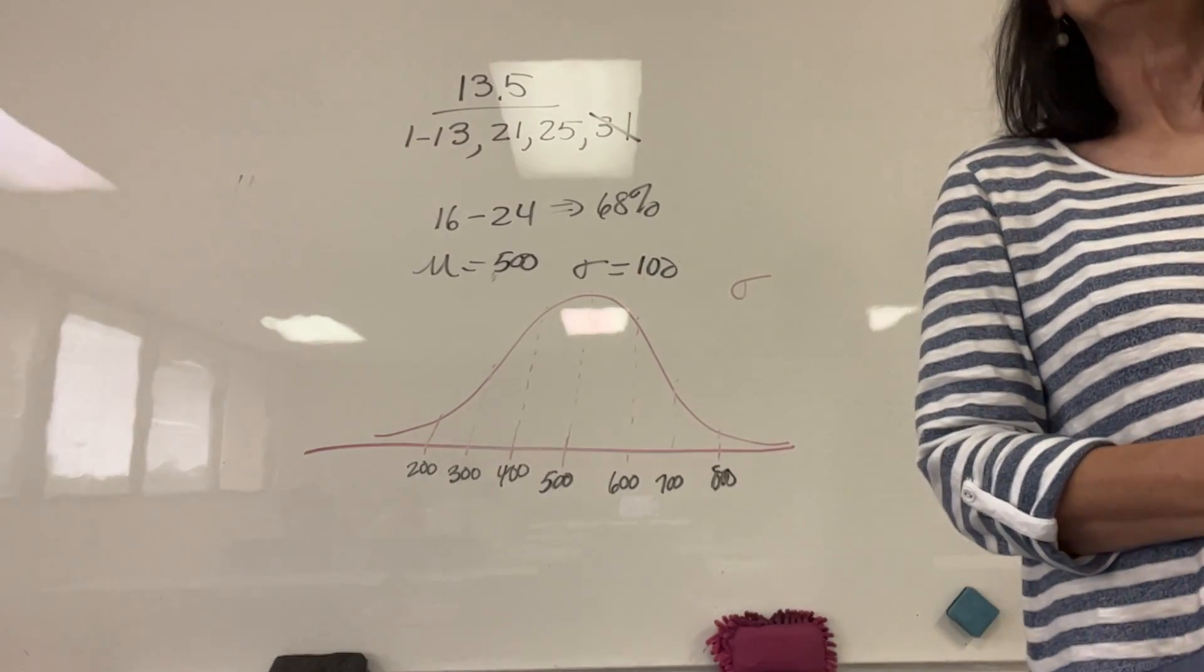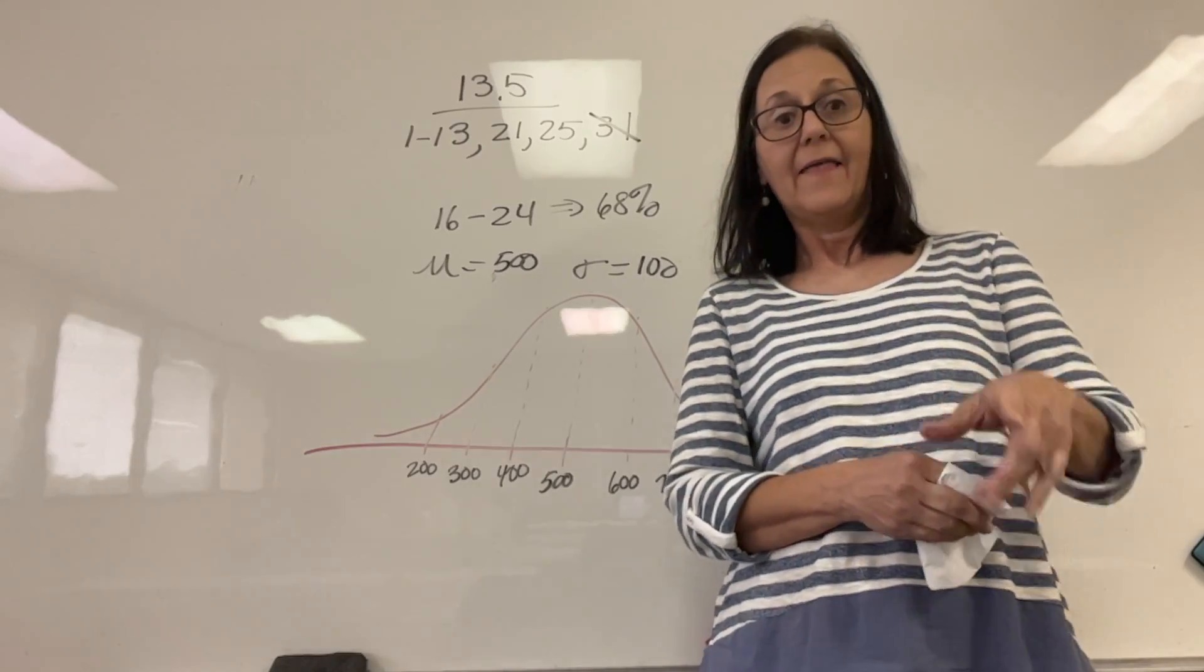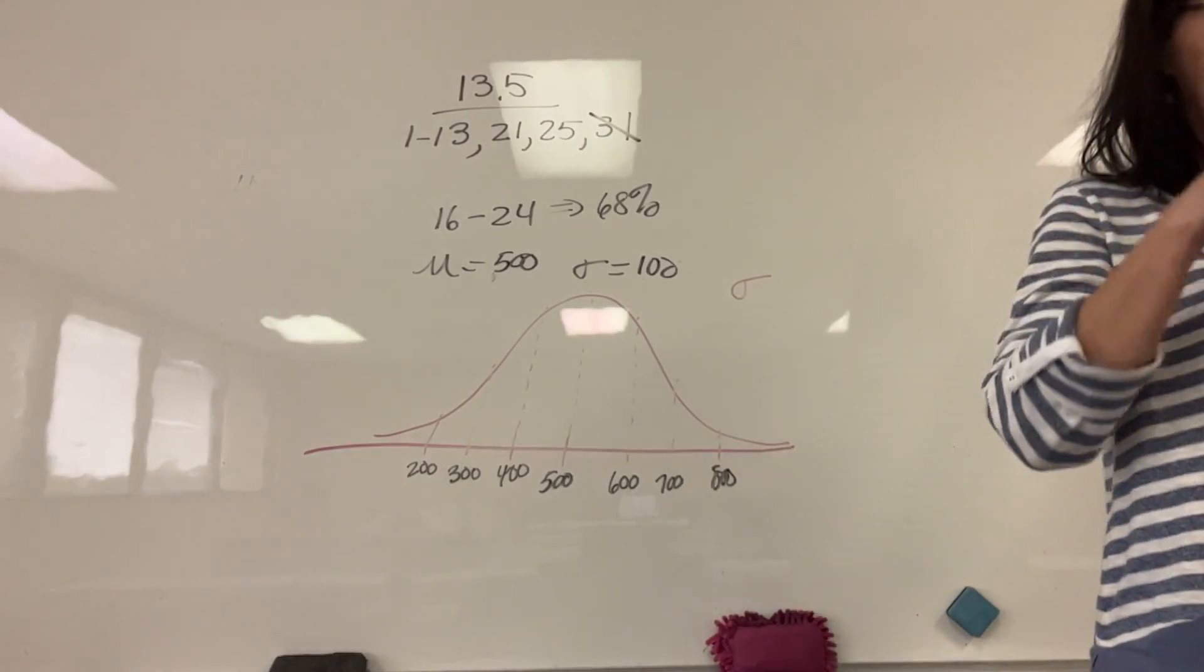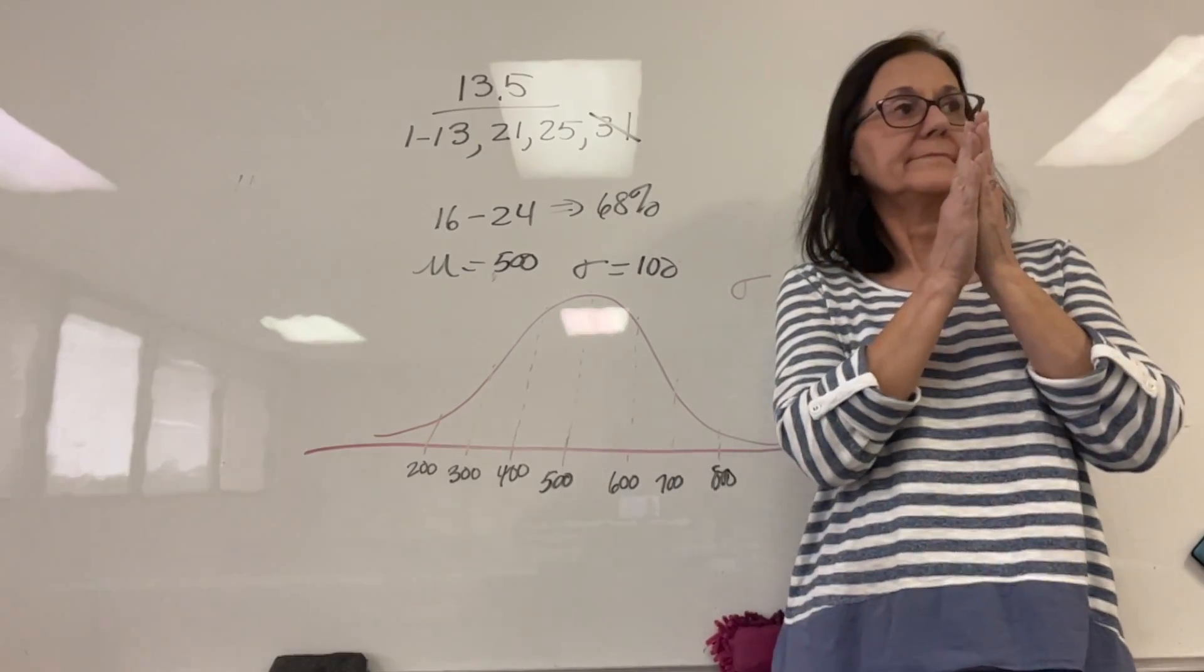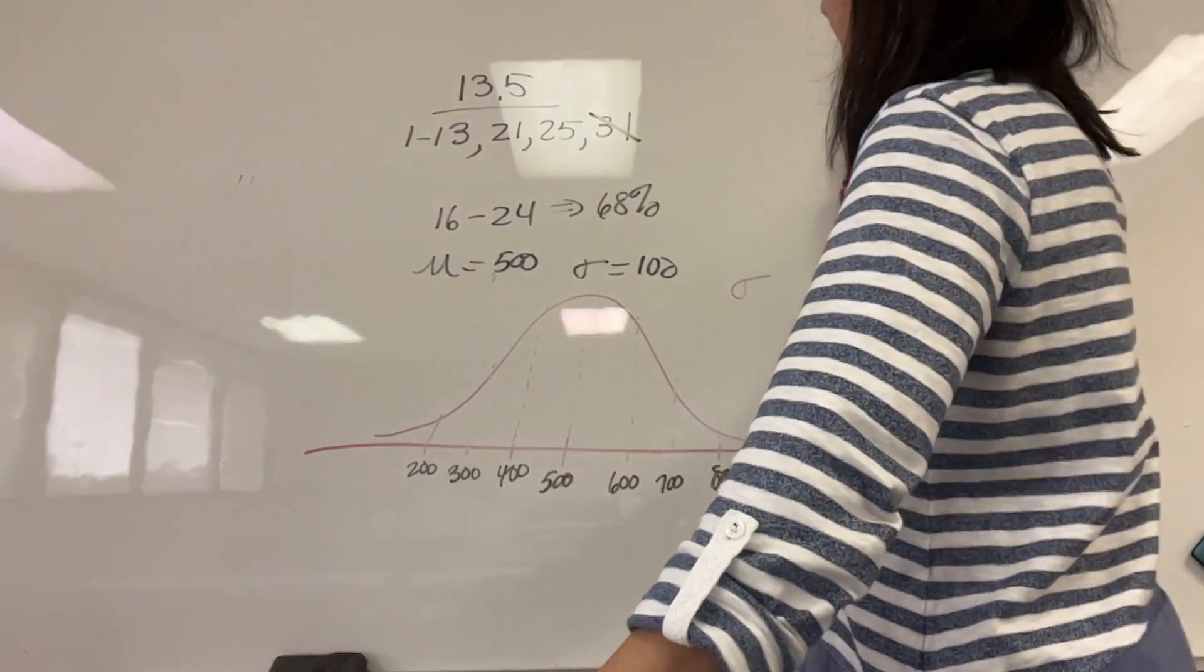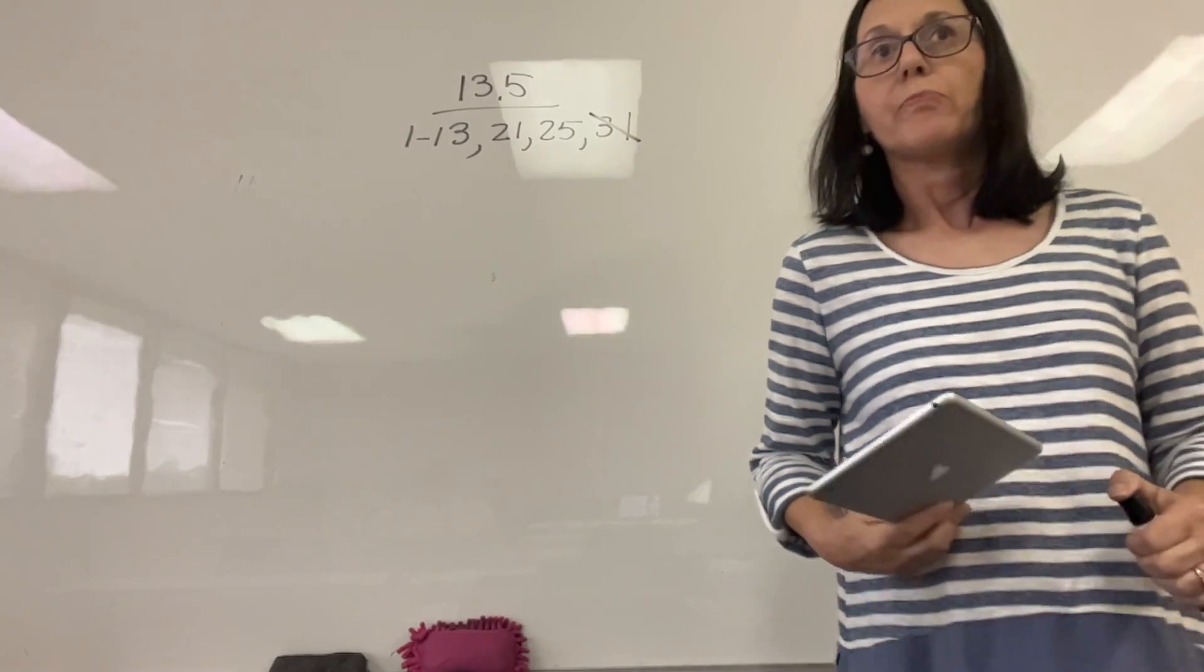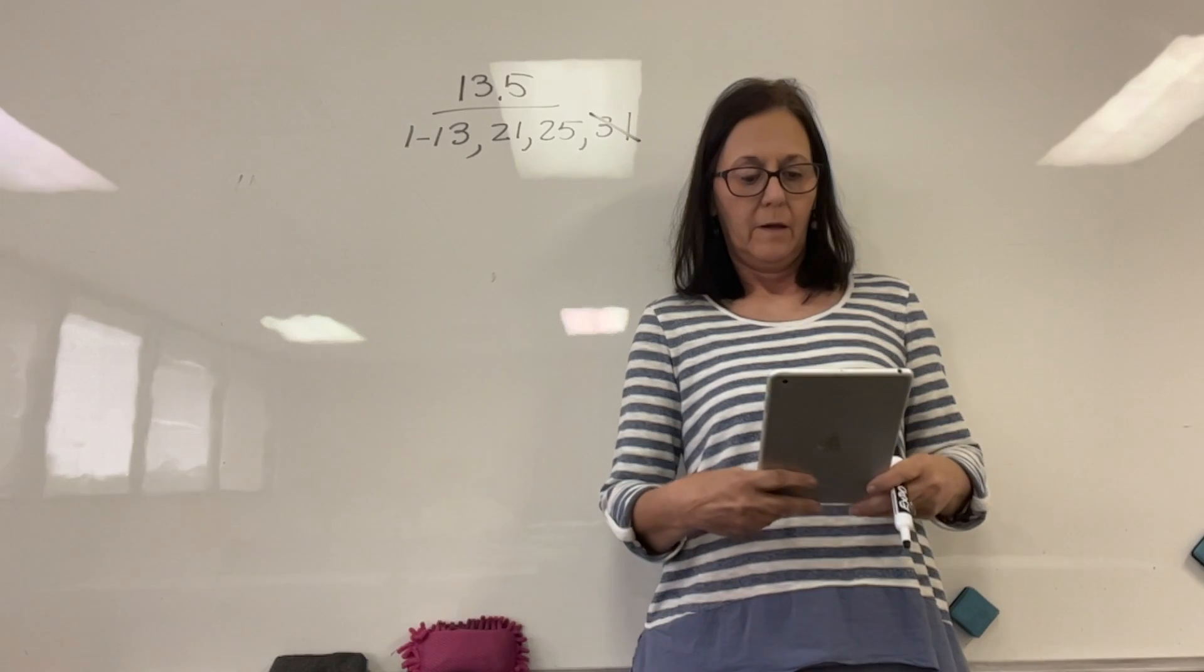So what did we do? We just did stat, calc. Entered it in the list. Stat, edit. And then we quit out of that and went stat, calc, one variable stats. And it gives you all the numbers. What standard deviation is at the sigma? I will always ask whenever you hear that word standard deviation, I'll always ask for the sigma.